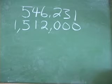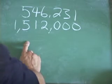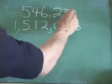Okay, we've got one last example here. 1,512,000. Is that number divisible by 7? Again, we use our reference 546,231.